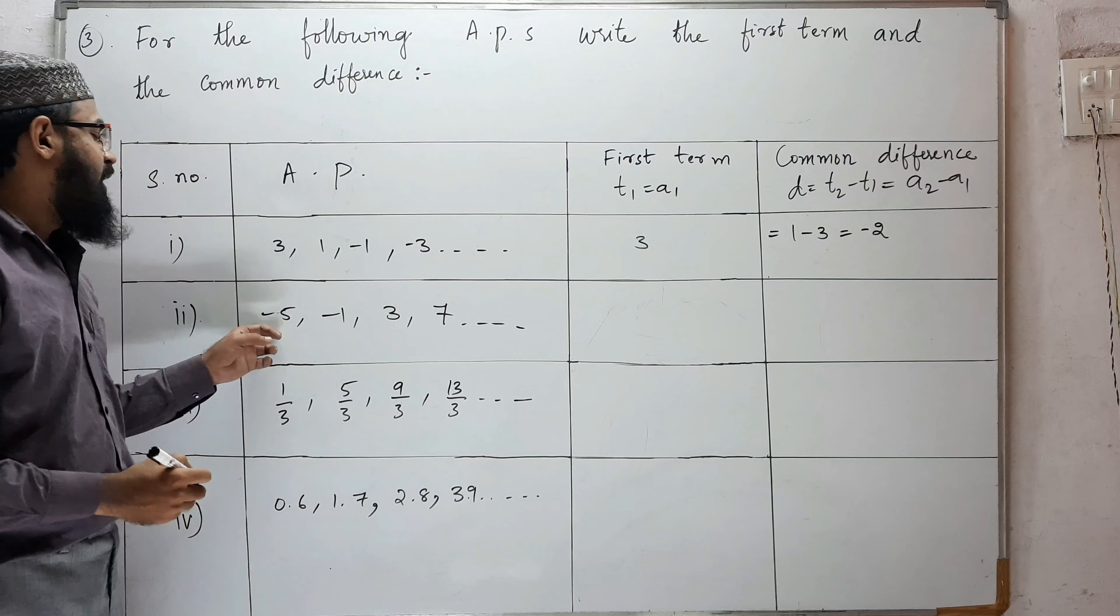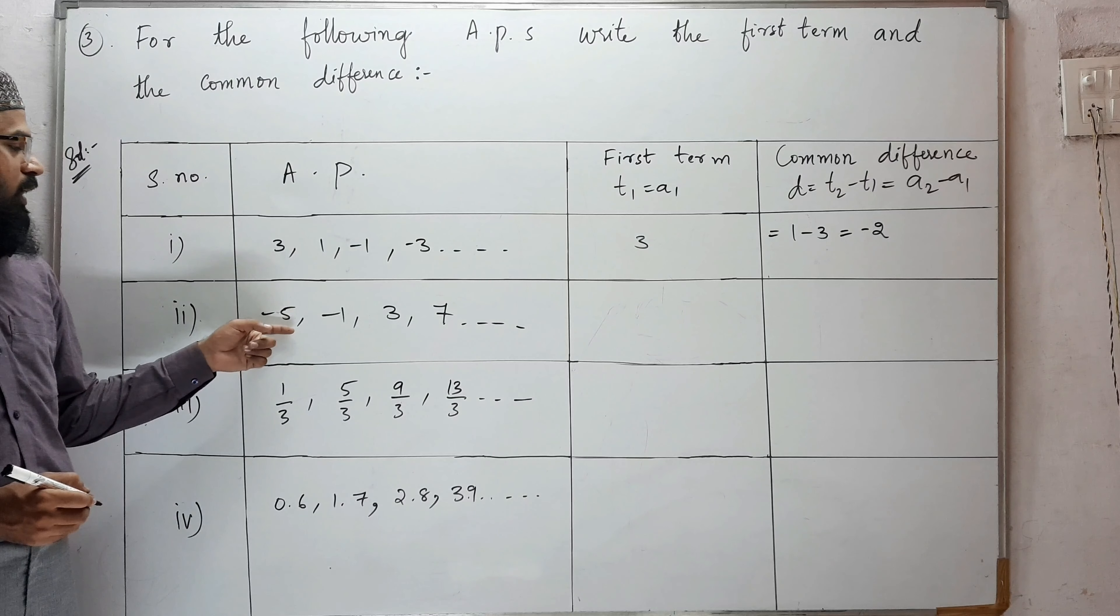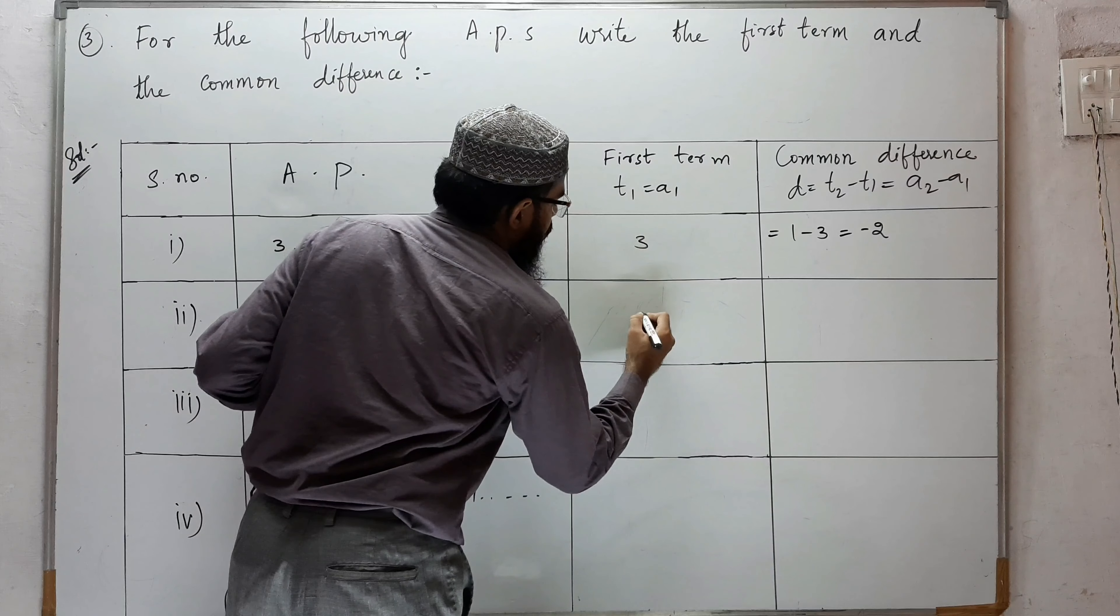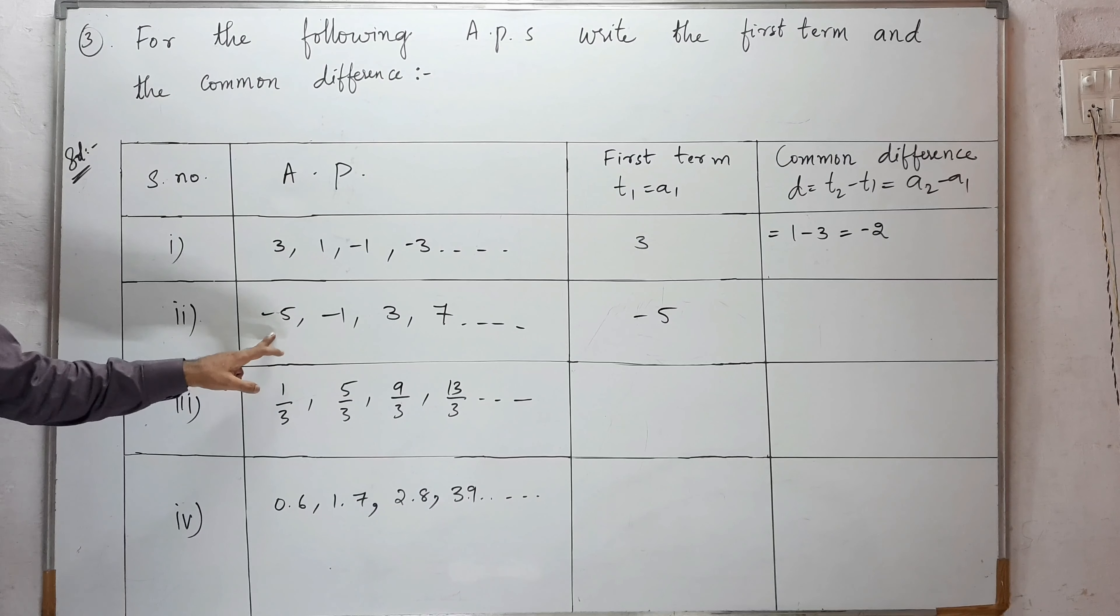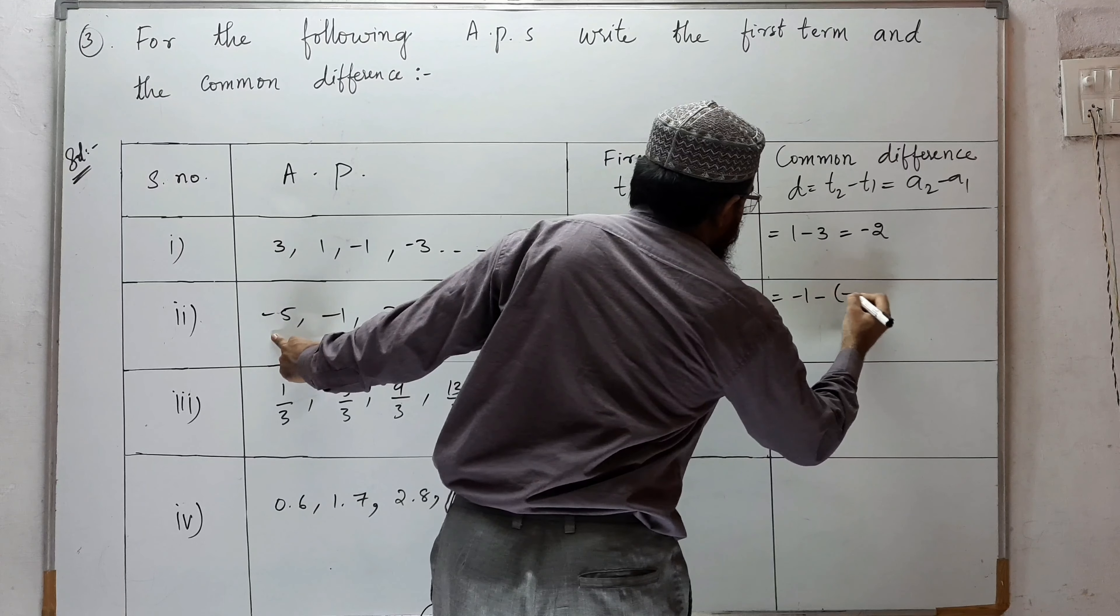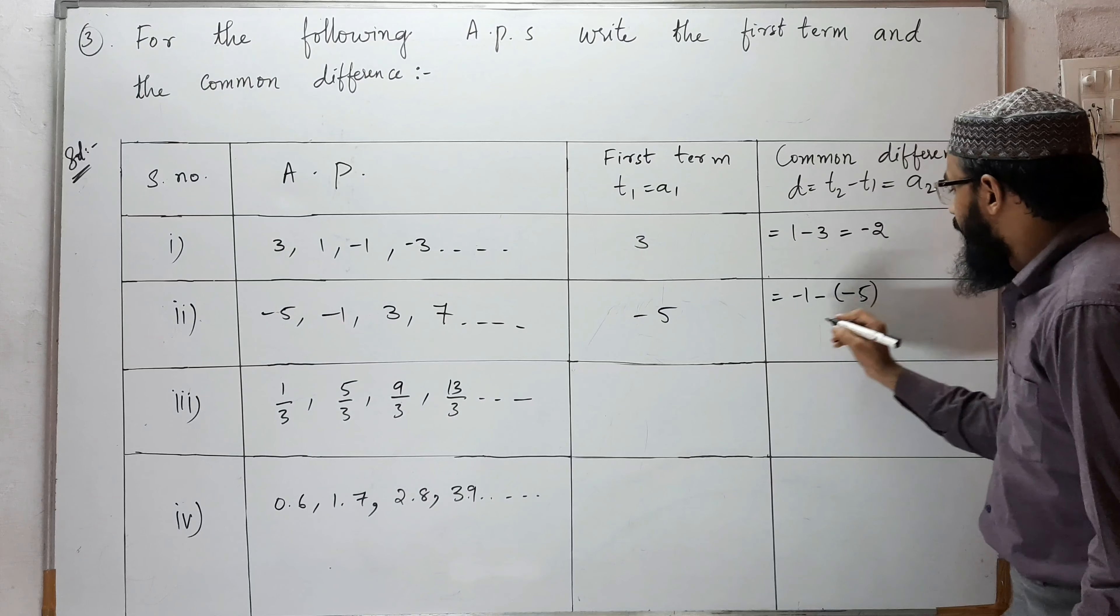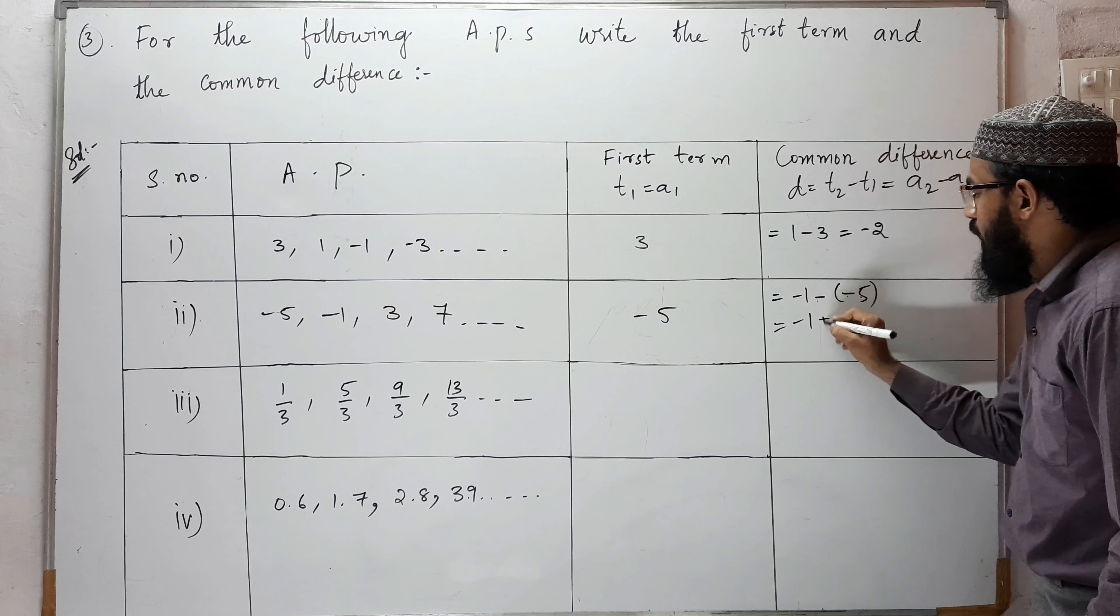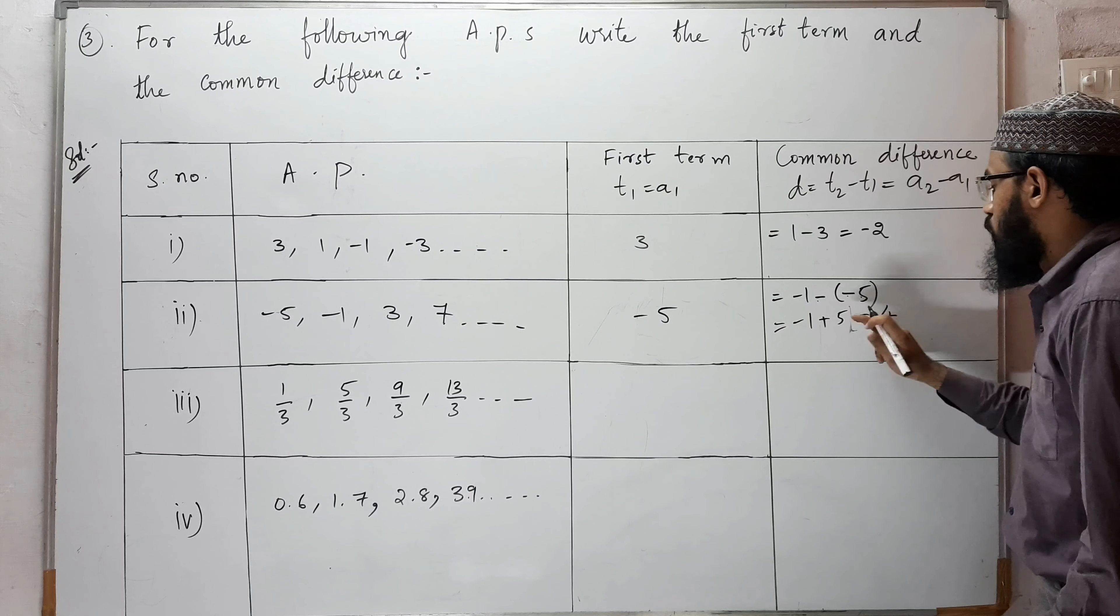Next: minus 5, minus 1, 3, 7. Here A1 is minus 5. The common difference is A2 minus A1: minus 1 minus minus 5. We get minus times minus equals plus, so minus 1 plus 5 equals 4.